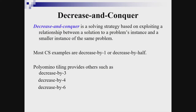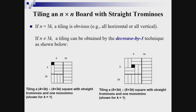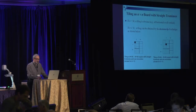The next strategy is decrease and conquer, which works by exploiting a relationship between the solution to a problem instance and a smaller instance of the same problem. Most computer science examples are either decrease-by-1 or decrease-by-half. Polyomino tiling provides other examples such as decrease by 3, decrease by 4, and decrease by 6. One example is tiling an n by n board with straight trominoes if n is not a multiple of 3, which is an excellent example of the decrease-by-3 technique.